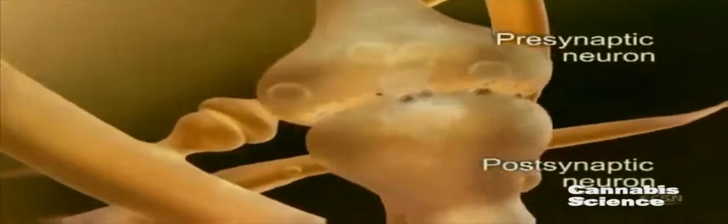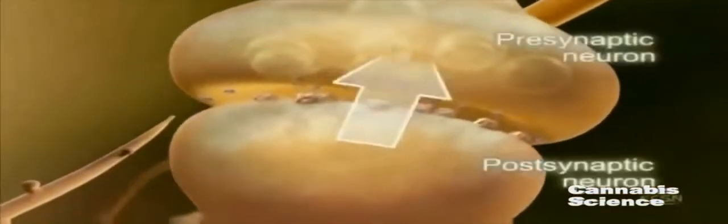Within the brain, CB1 receptors are among the most abundant G-protein-coupled receptors. However, in contrast to classical signaling, where information travels from pre- to post-synaptic neurons, the ECS uses retrograde signaling — the information travels from post- to pre-synaptic neuron.